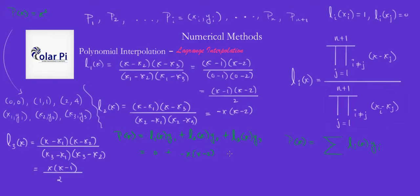1 plus L3, which we just figured out, times Y3. What is Y3? 4. So, we have 4 times L3, which is X times X minus 1 all over 2, right? Okay, got it.